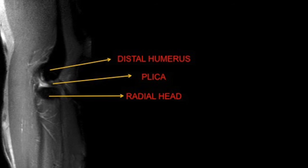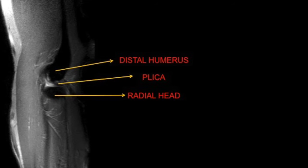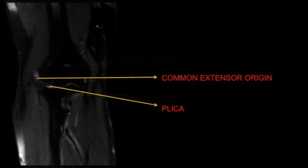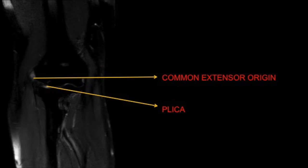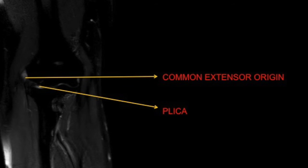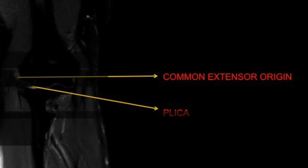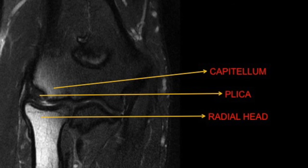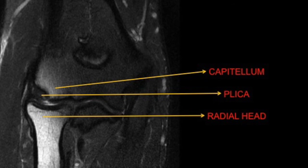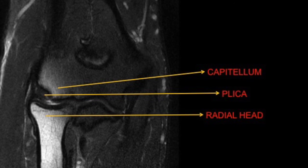The most common plica in the elbow is the radiocapitular one, at the posterolateral aspect. It fills the joint space and typically does not allow complete extension of the elbow. Repeated stress leads to chondromalacic changes, as we see in the capitulum in this case.